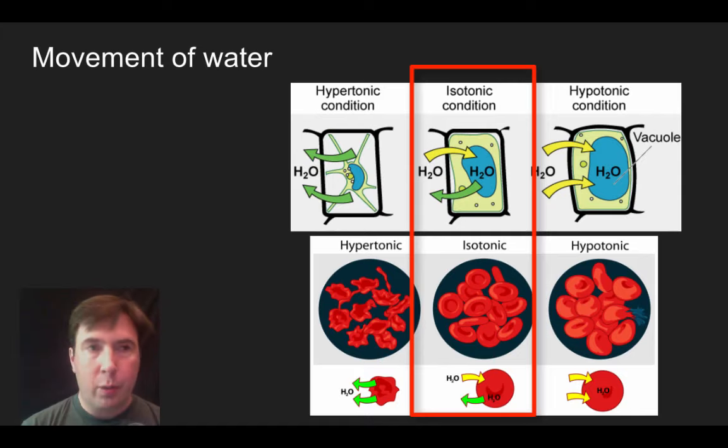If this was your tomato plant, the tomato plant would look a little wilty. In the case of animal cells, animal cells are completely happy in an isotonic environment. And so therefore we see these nice happy red blood cells down on the bottom.